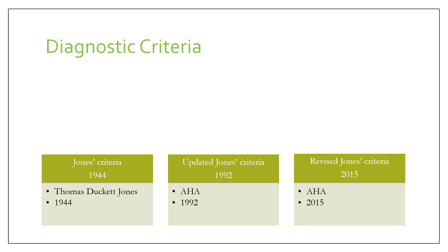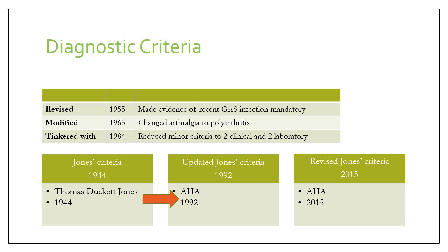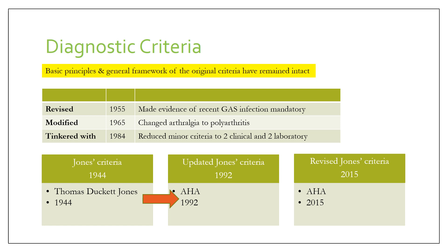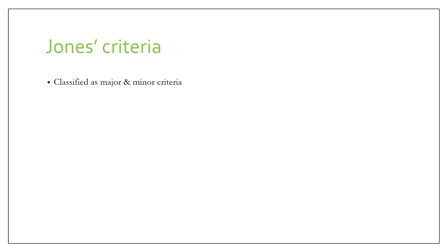The diagnostic criteria originally given was the Jones criteria, given by Thomas Duckett Jones in 1944. It was updated in 1992 by the American Heart Association. Between 1944 and 1992, the Jones criteria was revised in 1955, when evidence of group A streptococcal infection was made mandatory for diagnosis. It was modified in 1965 when polyarthritis replaced arthralgia as a major criterion, and tinkered with in 1984 when minor criteria were reduced to clinical and two lab criteria.